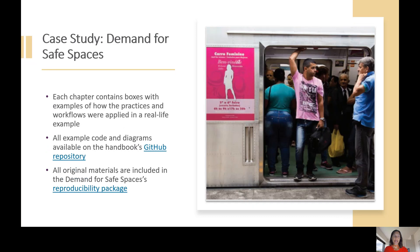To illustrate the empirical research tasks described in the handbook, we use a case study of a DIME Impact Evaluation in Rio de Janeiro, the Demand for Safe Spaces study. Each chapter contains boxes with examples of how the practices and workflows described in that chapter were applied in this real-life case. All the examples of code and diagrams referenced in the case study boxes can be accessed directly through the handbook's GitHub repository, and all of the original materials are included in the Demand for Safe Spaces reproducibility package.